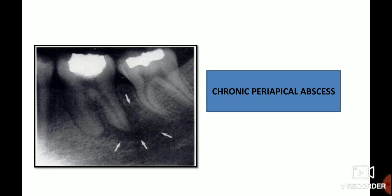The next case is chronic periapical abscess. Here there is ill-defined periapical radiolucency involving the distal root of 36, which is the significant feature of chronic periapical abscess. Acute periapical abscess has not been discussed because, except for slight thickening of the periodontal ligament space, there is usually no radiographic evidence of its presence.